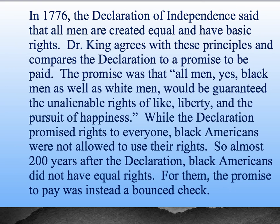In this body paragraph, I'm showing how Dr. King agrees with what the Declaration is saying, using the P method — make my point, have some evidence, and explain how that evidence backs up my point. Topic sentence: "In 1776, the Declaration said that all men are created equal and have basic rights." Then show the tie in: "Dr. King agrees and compares the Declaration to a promise to be paid." Using a direct quote: "The promise was that all men, yes, black men as well as white men, would be guaranteed the inalienable rights of life, liberty and the pursuit of happiness. While the Declaration promised rights to everyone, black Americans were not allowed to use these rights. So almost 200 years after the Declaration, black Americans did not have equal rights, and for them the promise to pay was instead a bounced check."